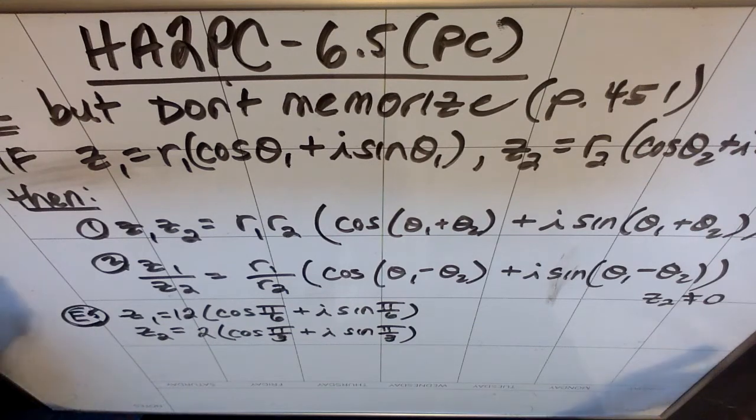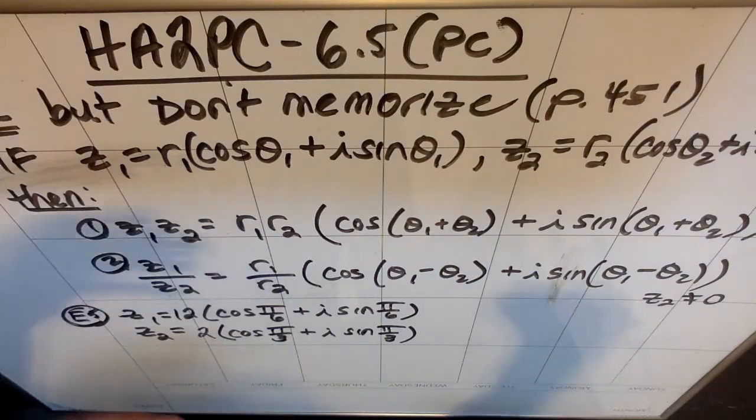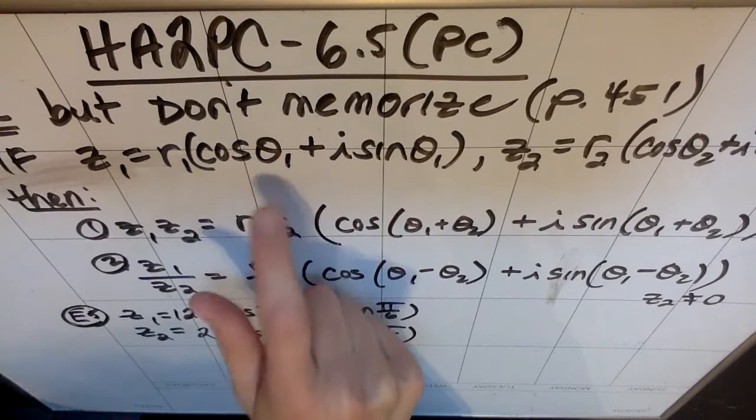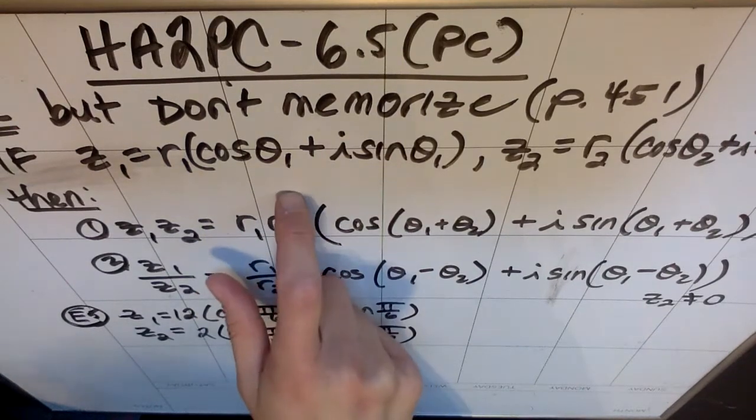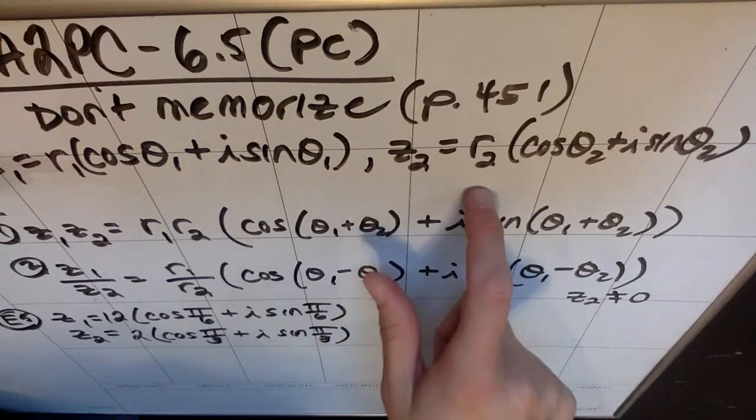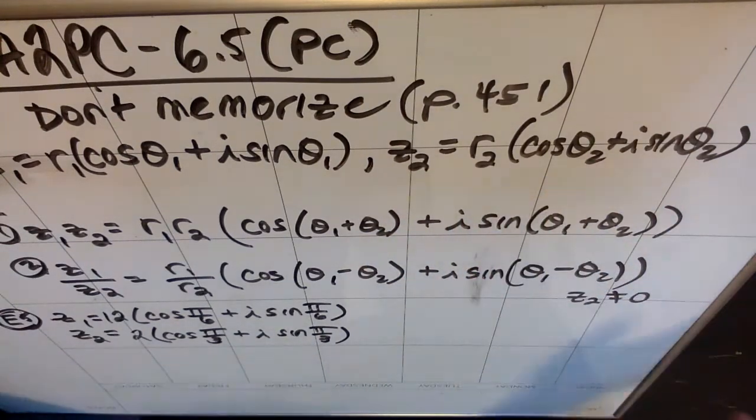So there are two formulas. Let's say we have two complex numbers, z sub 1 and z sub 2. For z sub 1, all of the parts I'm going to mention have 1 subscripts. So z sub 1 has an r sub 1 and a theta sub 1 in place of the cosine and the sine. And z sub 2 is the same situation, but instead of an r sub 1, z sub 2 has an r sub 2 and a theta sub 2.